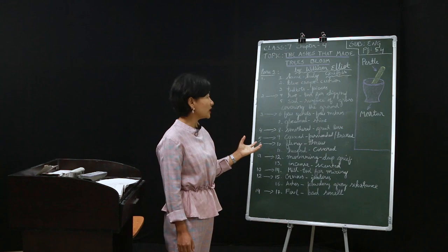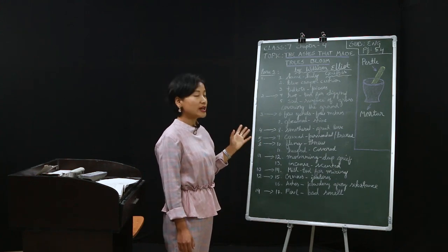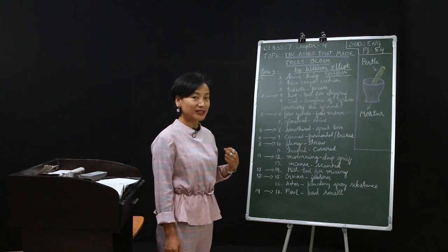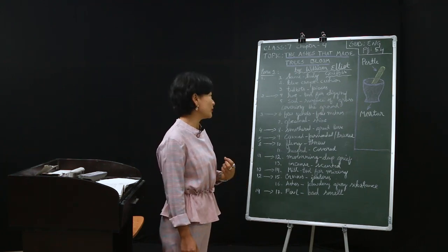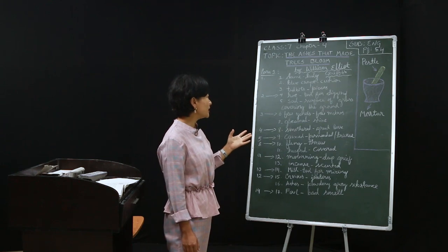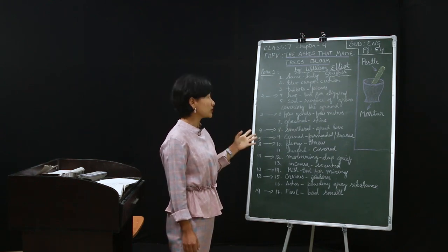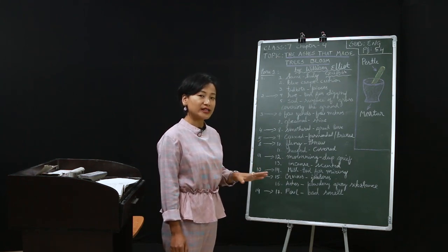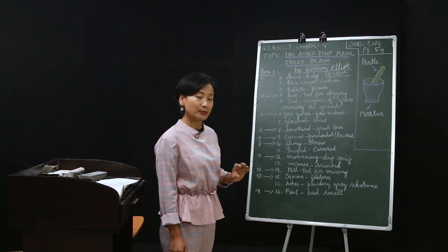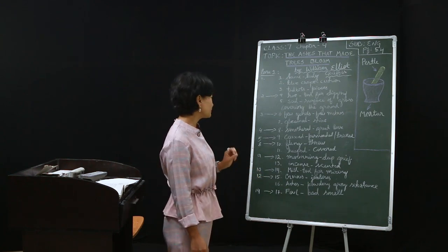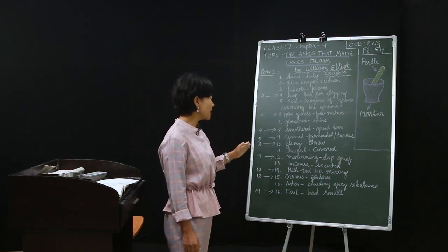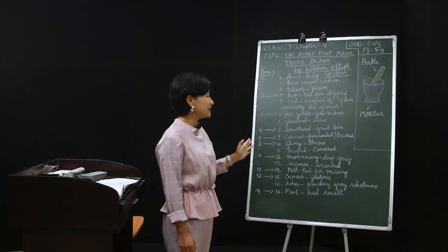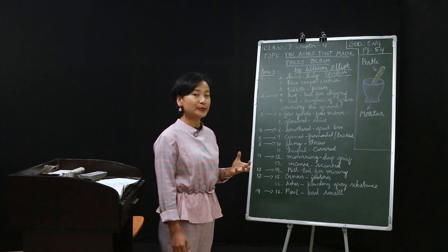In the second paragraph we have 'hoe,' H-O-E — a tool we use for digging, usually in the field. Then 'sod,' S-O-D, referring to the surface of grass covering the earth. In paragraph three, 'few yards' means a few metres away. And 'gleamed' means shining in a very brilliant manner.